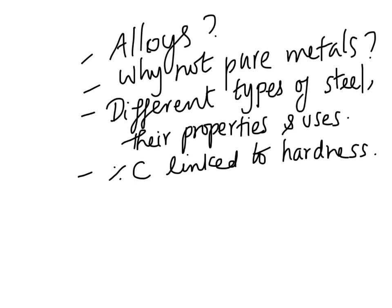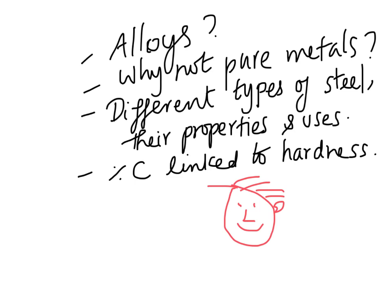We've reached the end of this video lesson. By now you should be able to describe what alloys are and why we use them instead of pure metals. You should also be able to describe different types of steel, explain how their properties make them suitable for certain purposes, and analyze data connecting percentage of carbon to hardness. When percentage of carbon increases, hardness increases — you should know all of this by now. That is the end of this lesson on iron and steel.